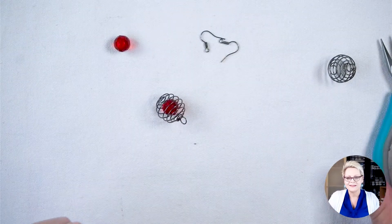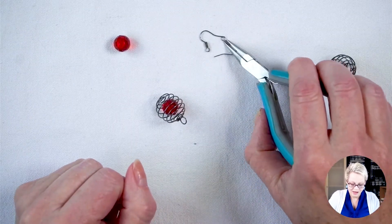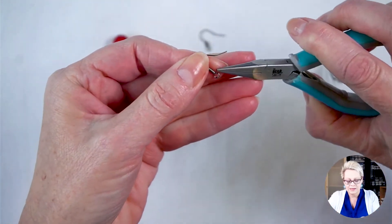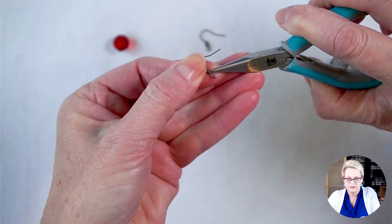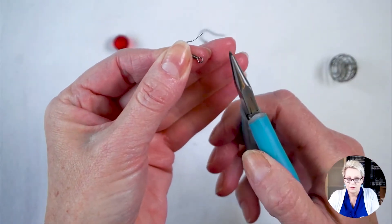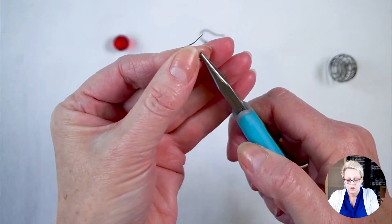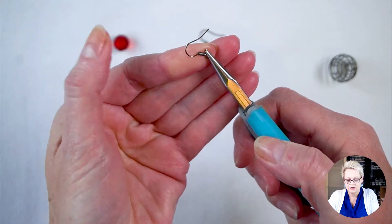Now I'm going to attach the ear wire. I'm going to do that by taking my pliers. I know that this side of the ear wire opens. So I'm going to hold the ear wire between my thumb and my forefinger, and I'm going to hold the loop of the ear wire in my chain nose pliers, just like that.